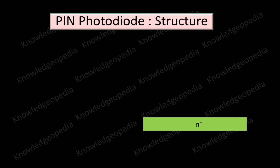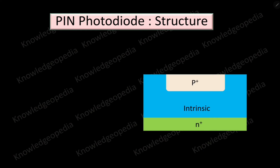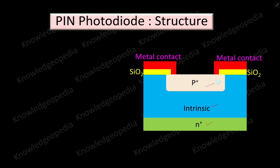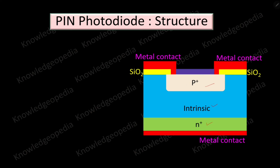In the construction of a PIN photodiode, first there is an N-type material, over which there is intrinsic material, and a P-type material is diffused into this intrinsic region — giving us a P-plus region, an intrinsic region, and an N-plus region. Metal contacts are provided for connecting the device. Silicon dioxide acts as an insulating material, insulating the metal contact from the intrinsic region. An anti-reflecting coating is provided at the window region to get more absorption of incident light.